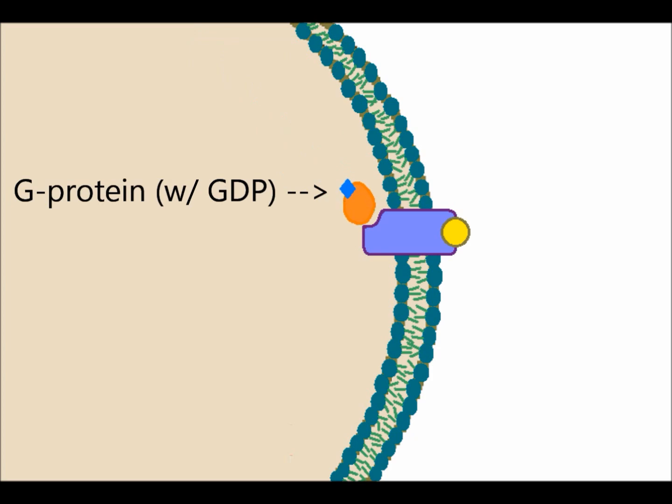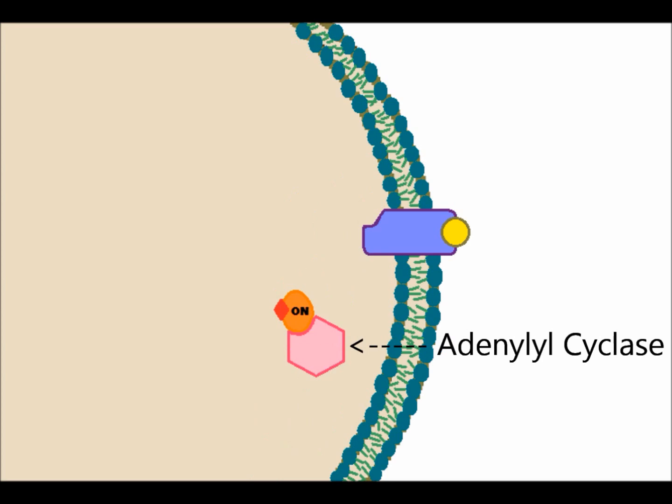The G-protein binds to the receptor protein and exchanges a molecule of GDP for a molecule of GTP. The GTP turns on the G-protein, allowing the G-protein to release from the receptor protein and activate an enzyme called adenylyl cyclase.